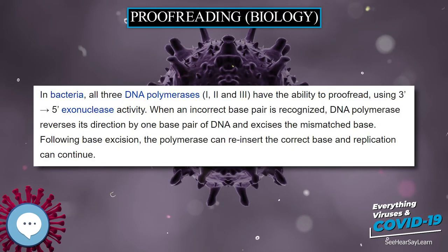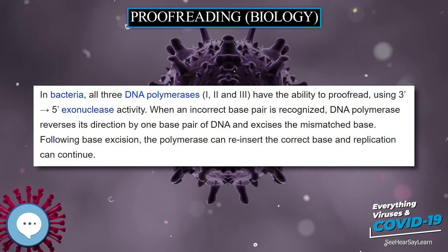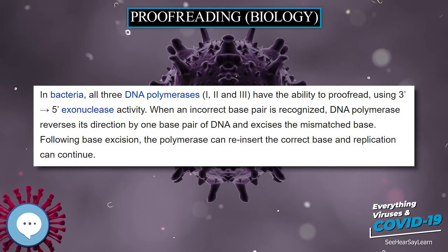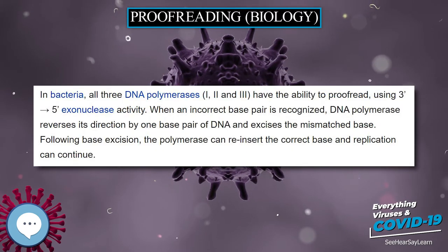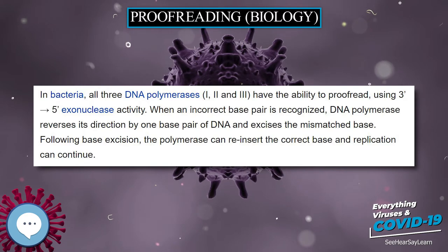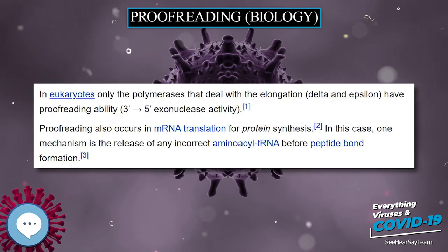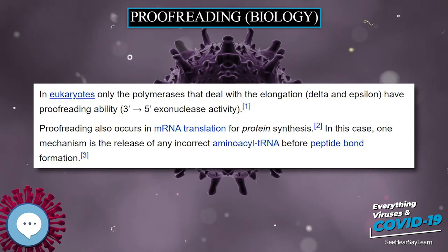In bacteria, all three DNA polymerases — 1, 2, and 3 — have the ability to proofread, using 3′–5′ exonuclease activity.